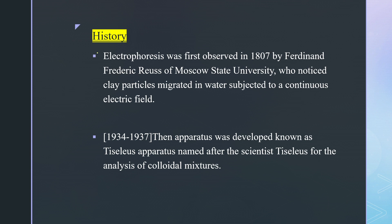History is always important. Electrophoresis was first developed in 1807 by Frederick Reese, a professor at Moscow State University, who noticed that clay particles migrated in water when subjected to a continuous electric field. This was the first key observation in the development of electrophoresis.